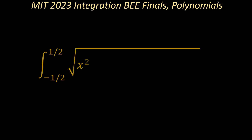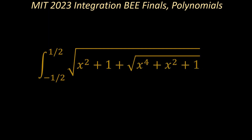We are finally at the finals. We started polynomials for the MIT 2023 Integration Bee questions. We had one question for the 2023 Integration Bee that had the polynomials — the integral of the square root of x squared plus 1 plus the nested square root of x to the power 4 plus x squared plus 1, integrating from negative one half to one half.